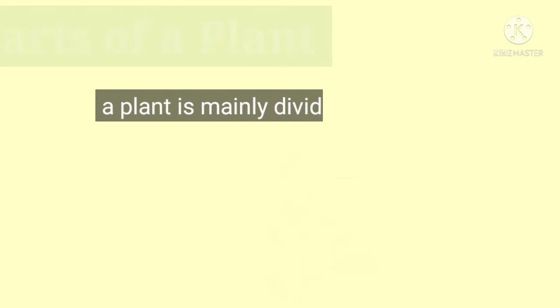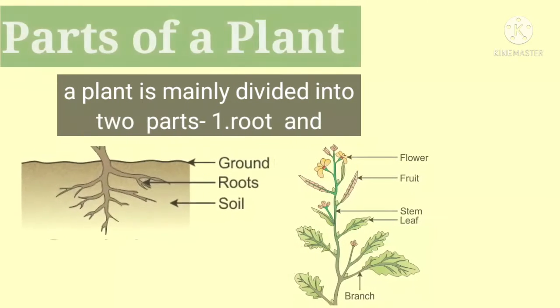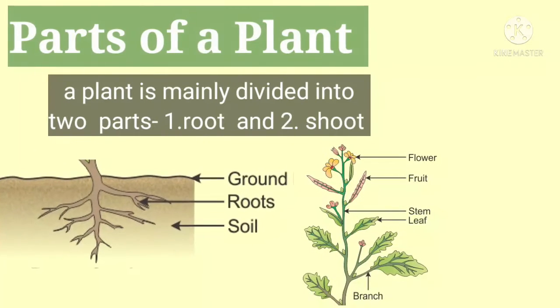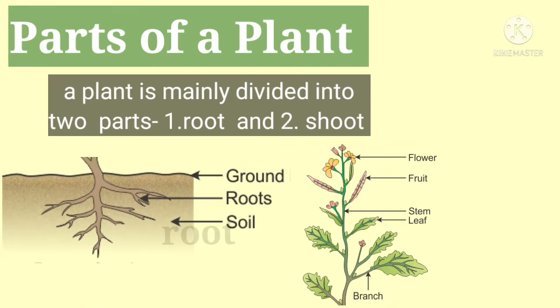A plant is mainly divided into two parts: root and shoot.